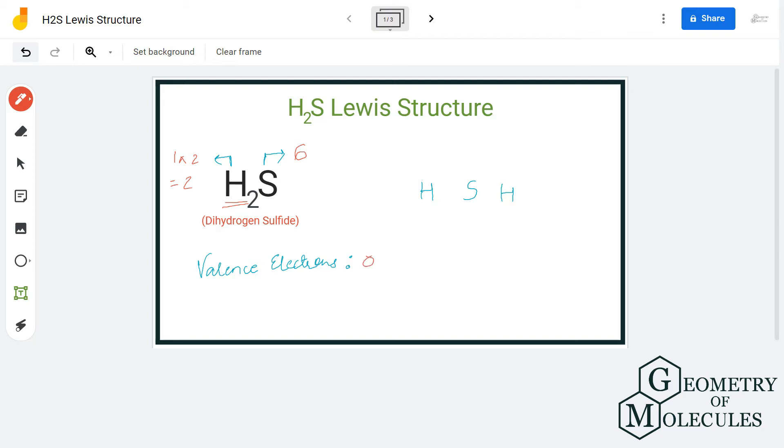Now let's start putting atoms and its valence electrons to draw the Lewis structure of this molecule. Sulfur atom will go in the center because hydrogen atoms cannot take the central position in Lewis structure. So we will place sulfur in the center and both the hydrogen atoms will go on the outer side.